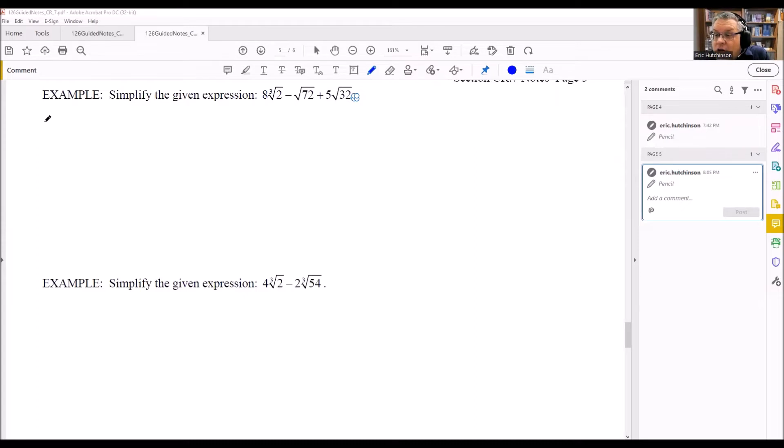So with this problem right here, I'm going to start by writing 8 cube root of 2. I can't do any more with that, so I'm going to move on to the next one. For 72, if you're not sure what that's going to be, we can always do a factor tree. So we can do 8 times 9, and then 8 is 2 times 4, and then the 9 we can write as 3 times 3, and then 4 can be written as 2 times 2.